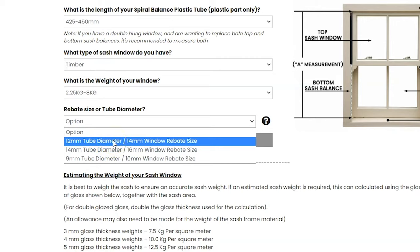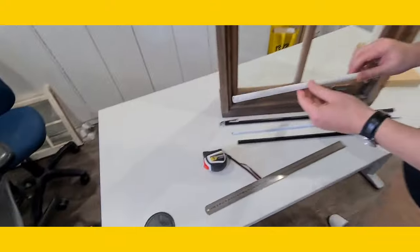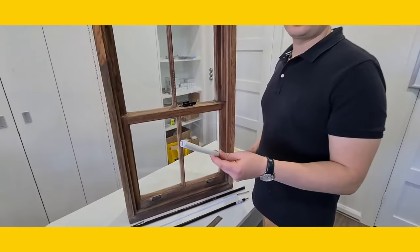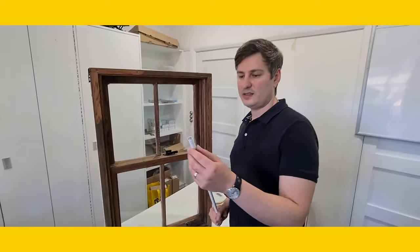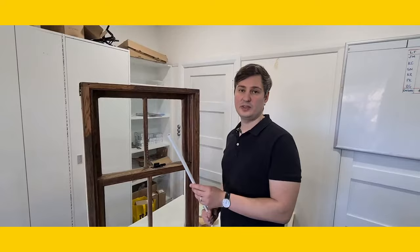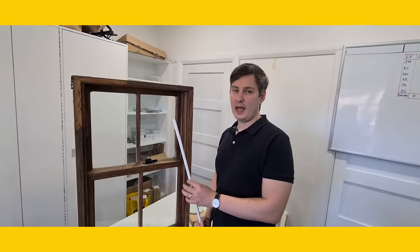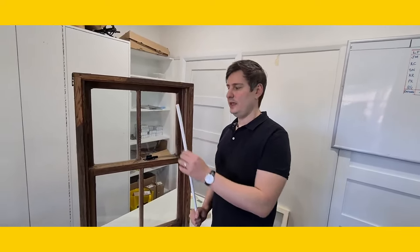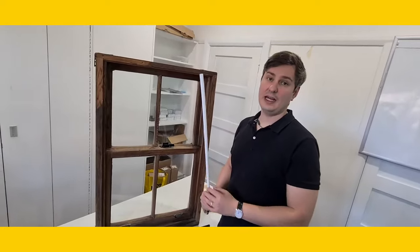So we will need to use a 12 millimeter spiral balance. This allows a bit of clearance between the frame and the window, so it eliminates any friction and allows your window to slide up and down.